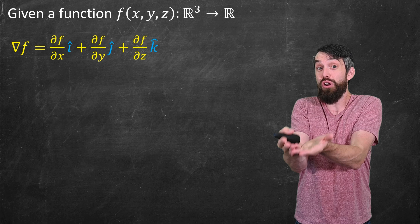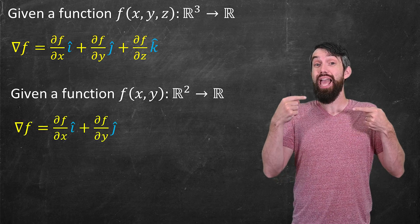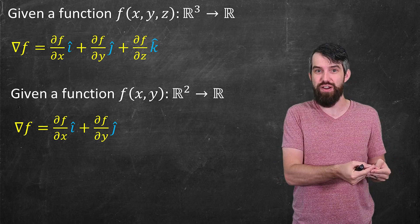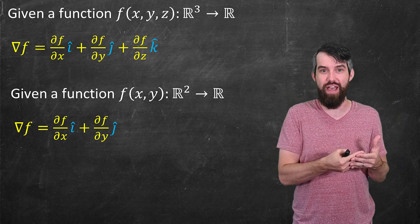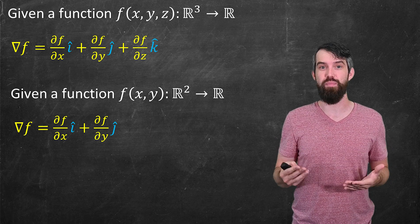That is, if you give me a scalar function f from either ℝ² or ℝ³ to ℝ, then I can give you a vector field, a corresponding vector field, given by the gradient of f. The gradient of f is a vector field, and it also has a very nice geometric meaning.